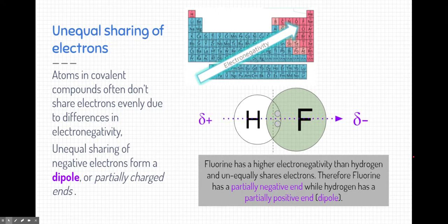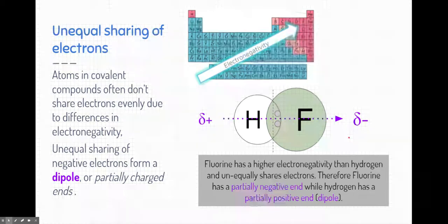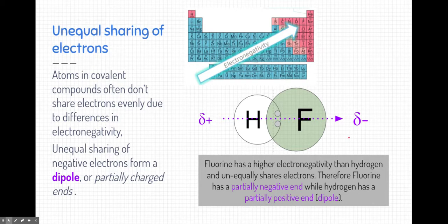What happens is this causes this molecule to have something called a dipole. It has a positive end and a negative end, but these aren't fully charged ends. These are just partially charged ends. So if you look here, these symbols, these are Greek letter delta, it's a lowercase d as you might say, represent a partial charge. So fluorine with a little bit extra electron pull has a partial negative charge. And hydrogen losing a little bit of its electrons to fluorine has a partial positive charge.